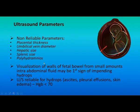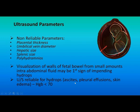We can see the fetal bowel loops — a small amount of intra-abdominal fluid may be the first sign of developing hydrops. Ultrasound is reliable for hydrops diagnosis. Signs include ascites, pleural effusion, skin edema, and hemoglobin less than 70.